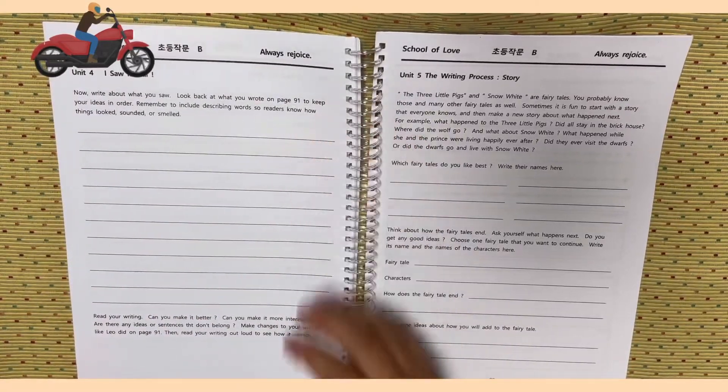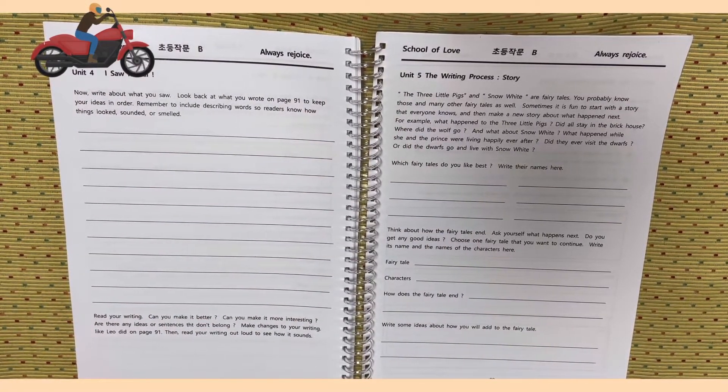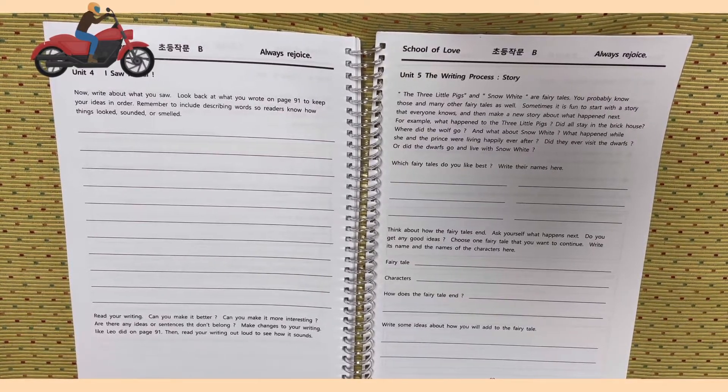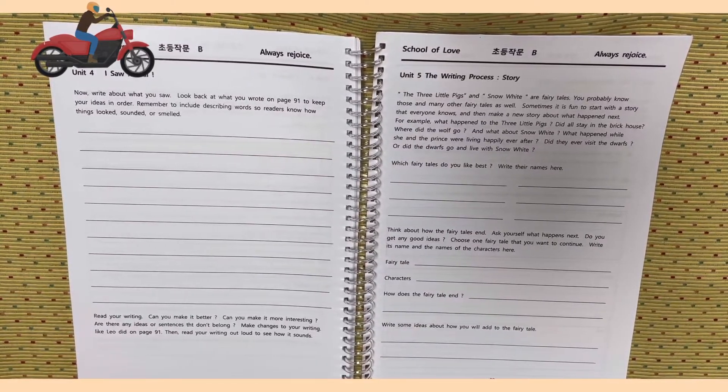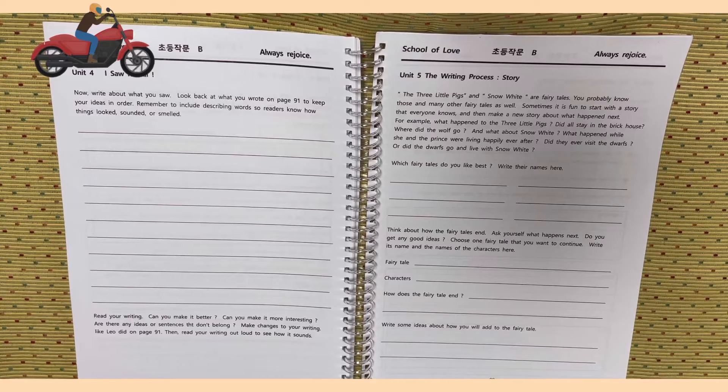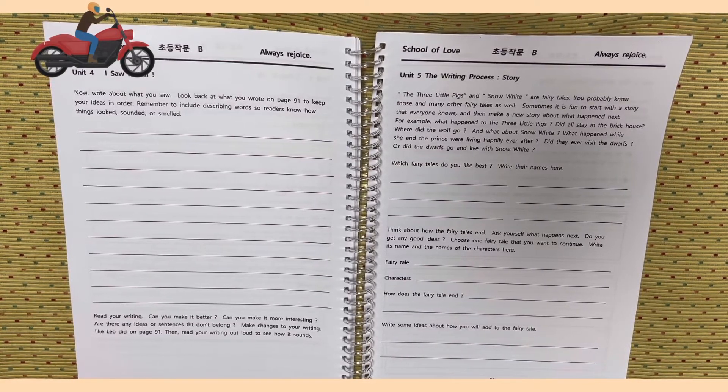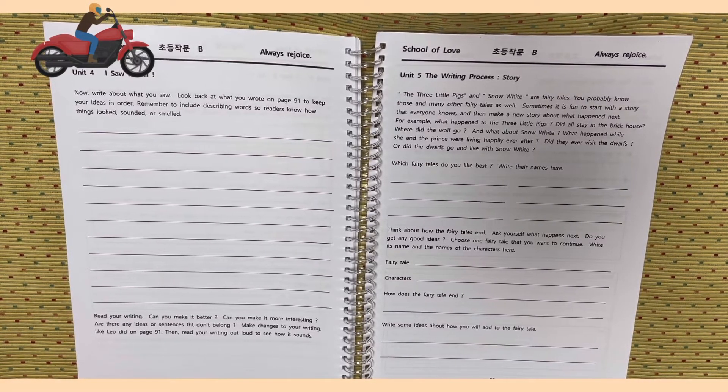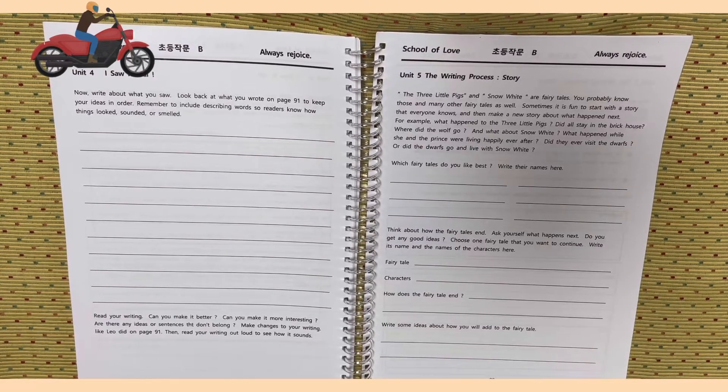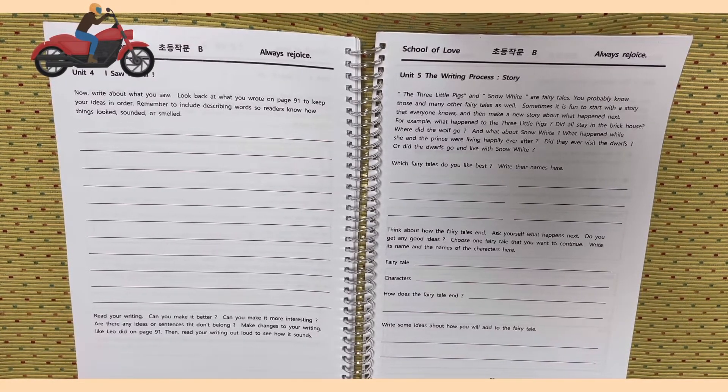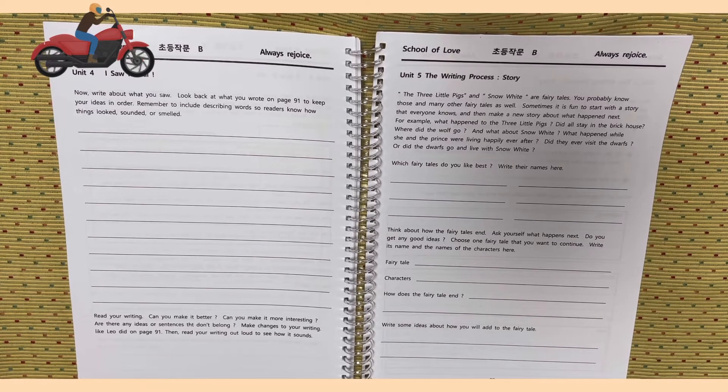Page 92, now write about what you saw. Look back at what you wrote on page 91 to keep your ideas in order. Remember to include describing words so readers know how things looked, sounded, or smelled. Read your writing. Can you make it better? Can you make it more interesting? Are there any ideas or sentences that don't belong? Make changes to your writing like Leo did on page 91. Then read your writing out loud to see how it sounds.